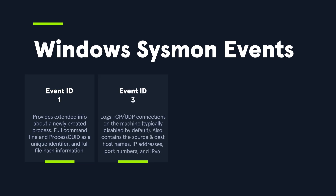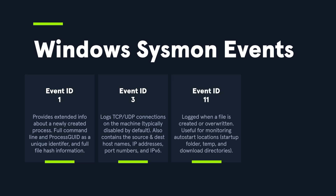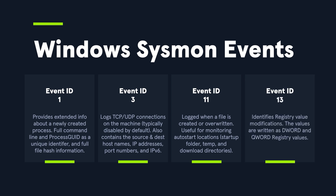Sysmon event ID 3 covers network connections, logging which process opened outbound connections along with IP addresses and ports — perfect for identifying beaconing and exfiltration. Event ID 11, file create, tells you where and when new files were created, like dropped payloads or scripts for persistence. Event ID 13, registry value set, logs registry changes like adding a run key for persistence mechanisms.